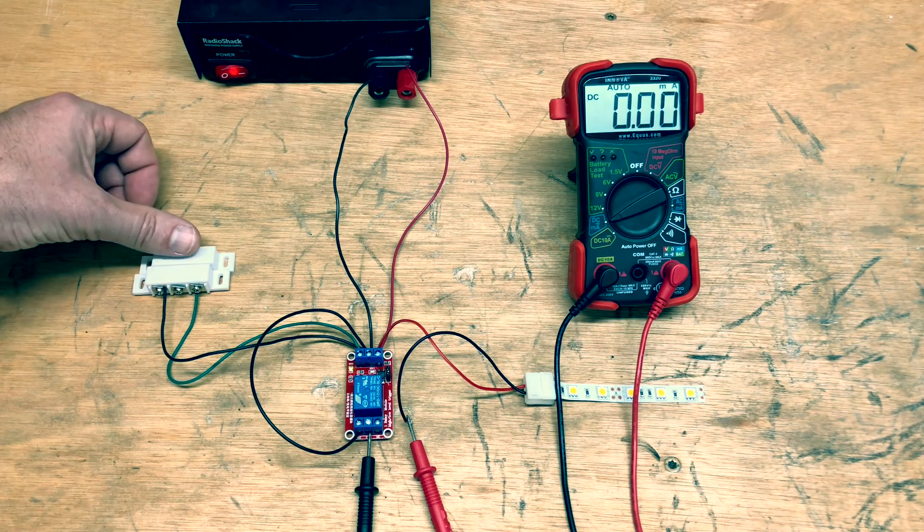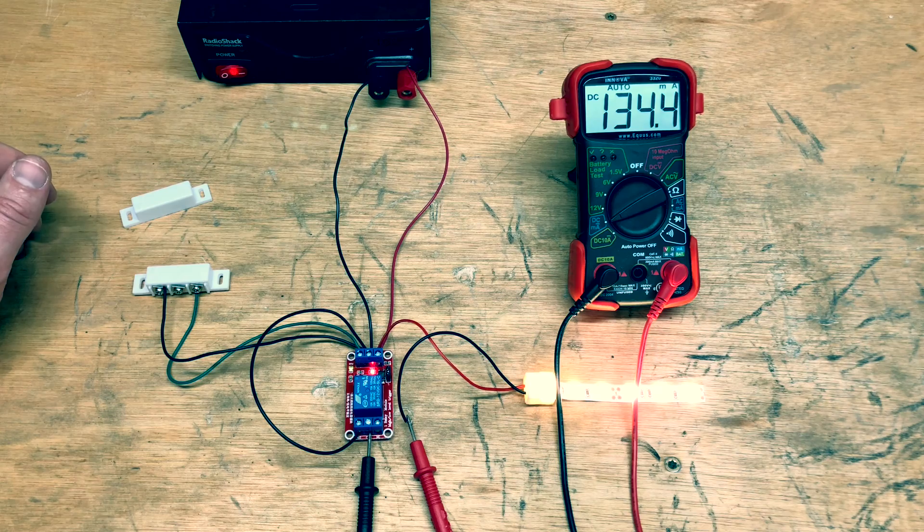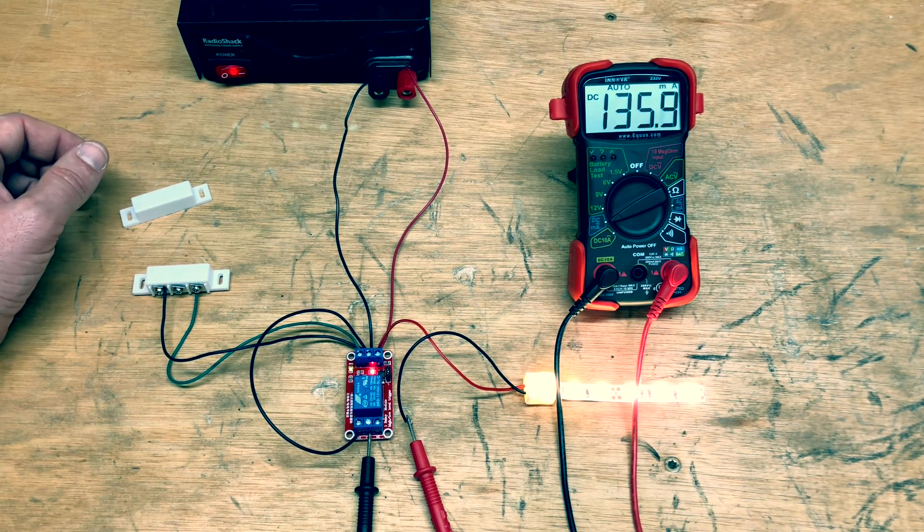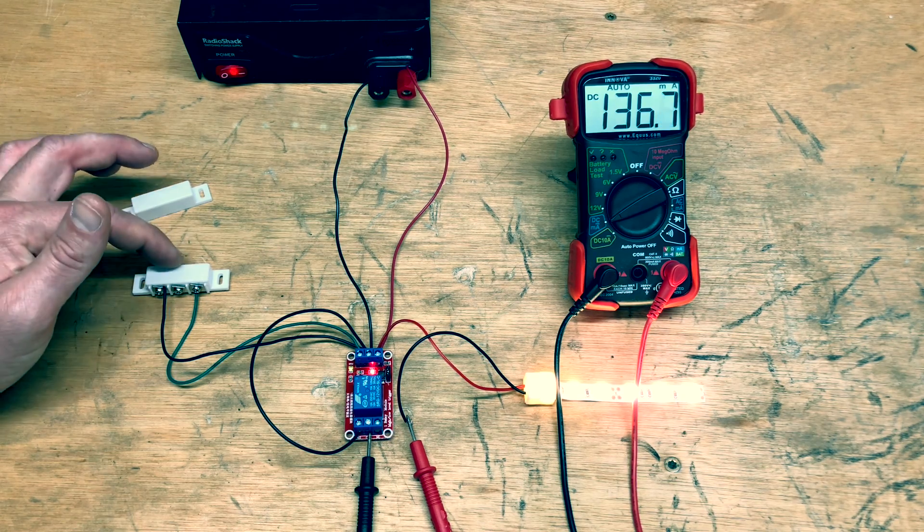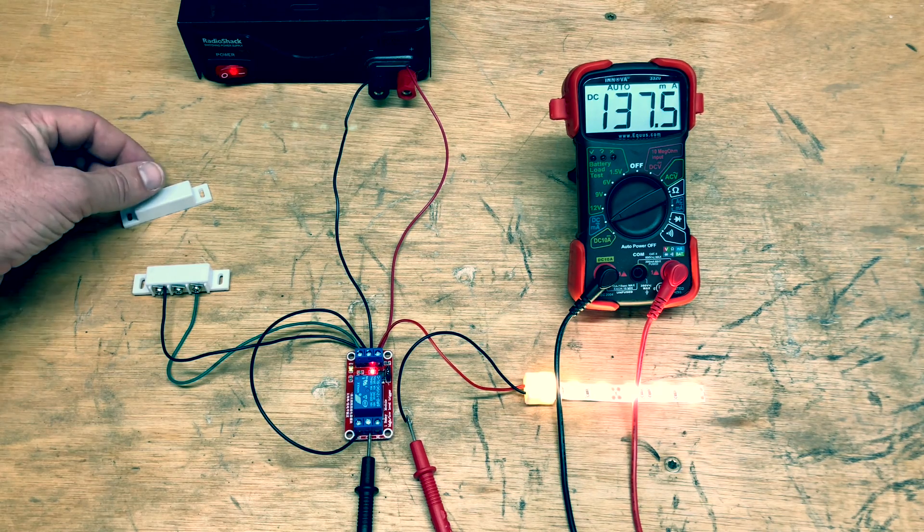So let's see how much current this draws. 133 milliamps, 135. It's not very much. Remember what our previous one was? It was for going through the reed switch, it was 1.25. This is 130 something, 137.